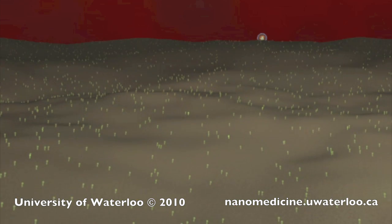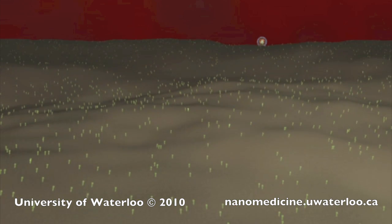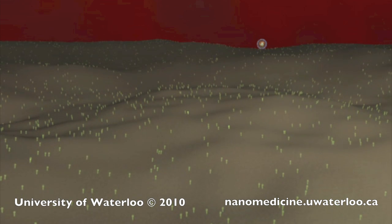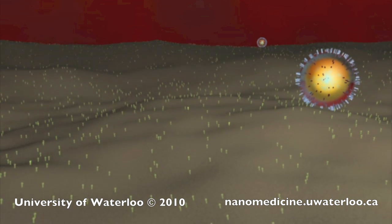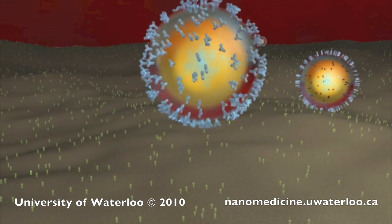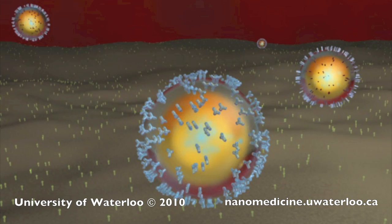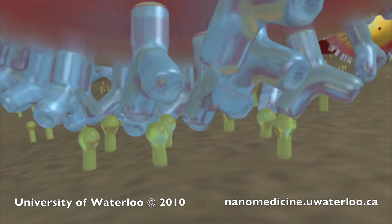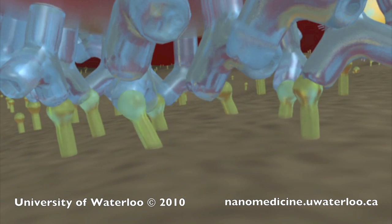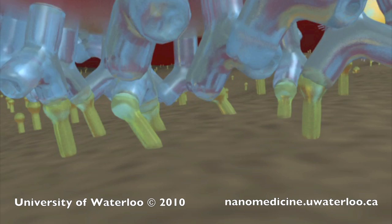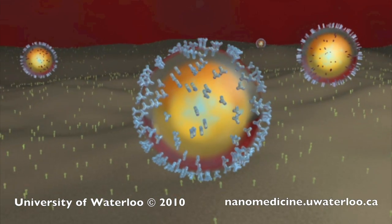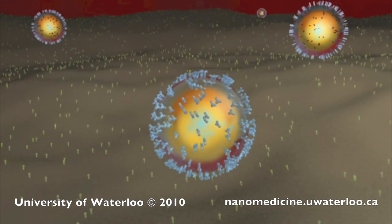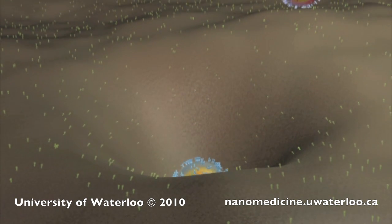On the cancer cell surface membrane, the nanoparticles encounter surface receptor molecules — microscopic markers expressed on cancer cells but not expressed by normal tissues. The nanoparticles' targeting ligands bind specifically to these receptors, triggering a response also known as receptor-mediated endocytosis, which draws the nanoparticles into the cancer cell.